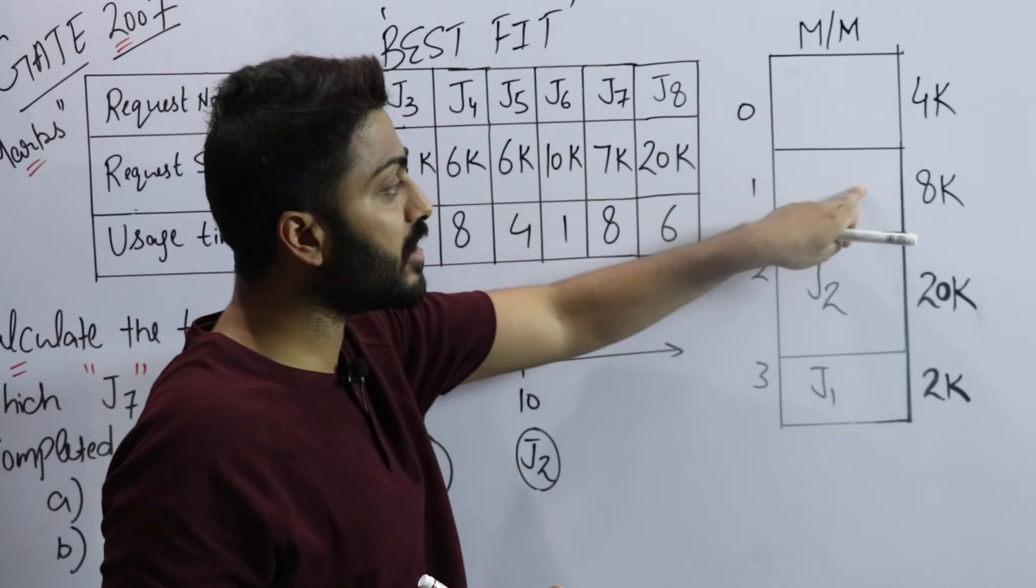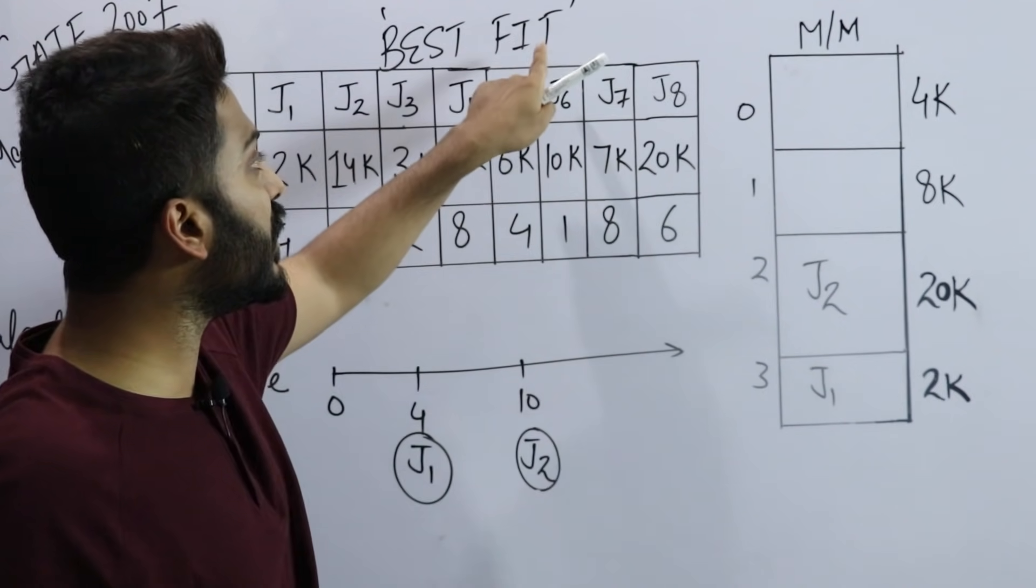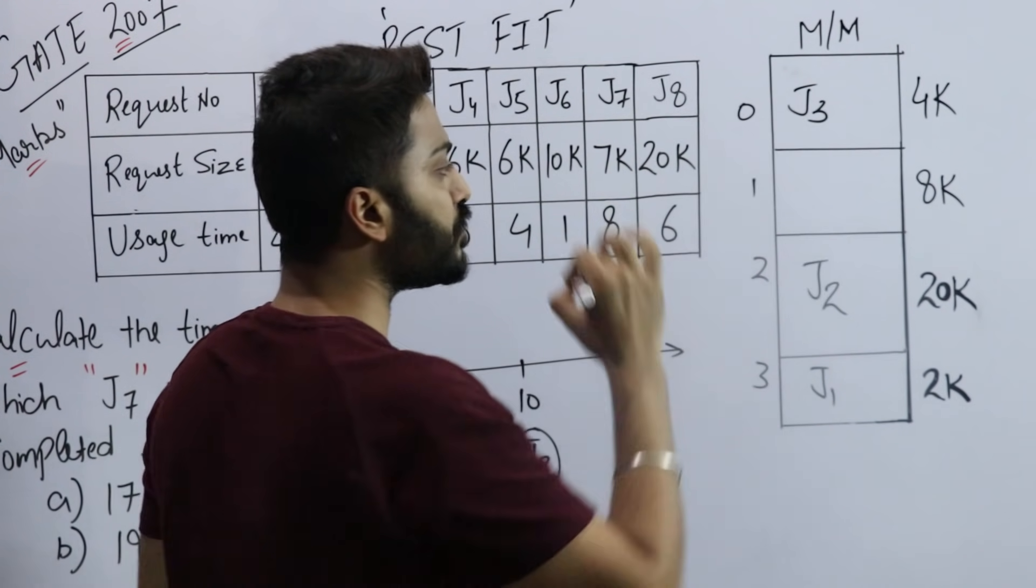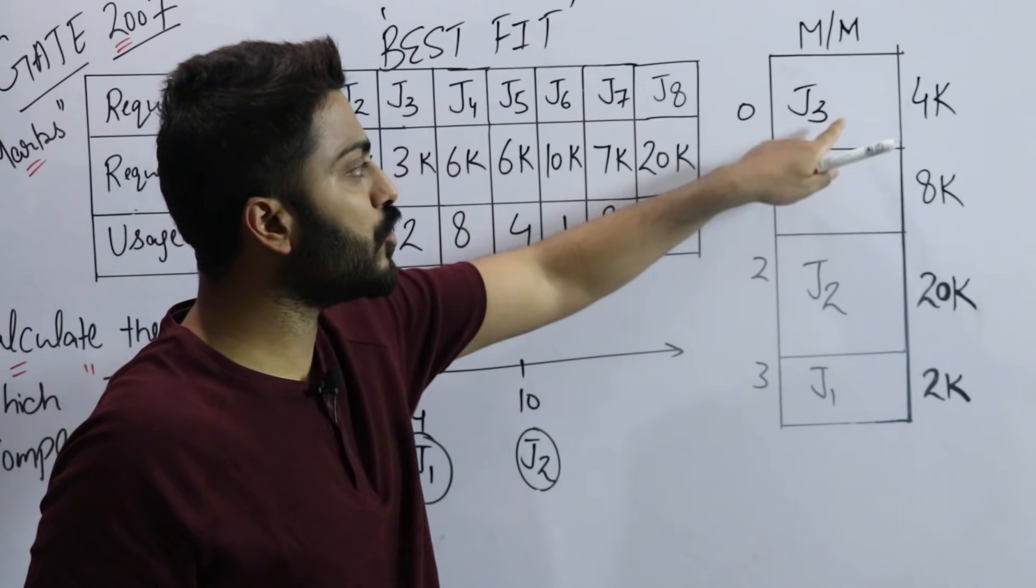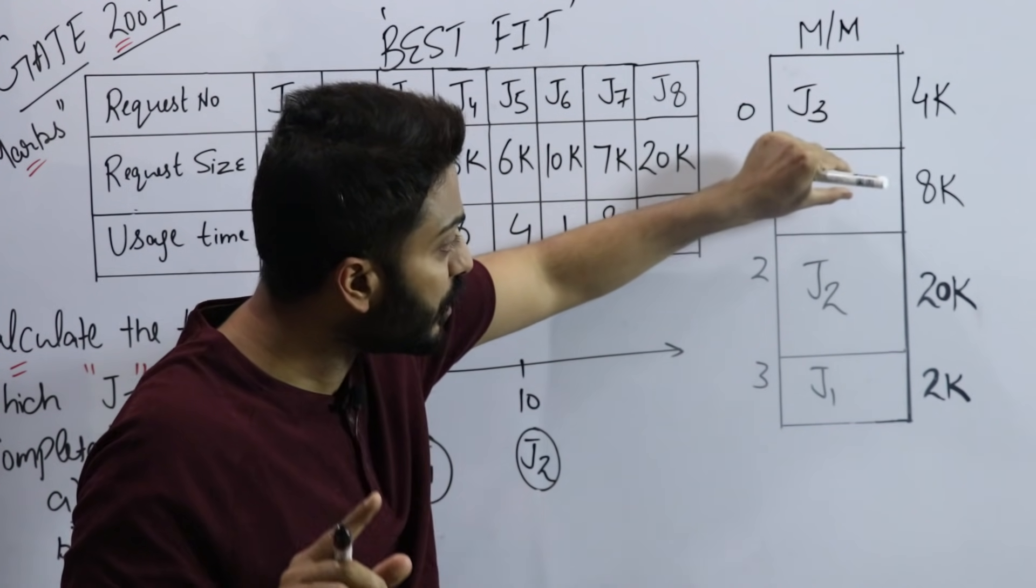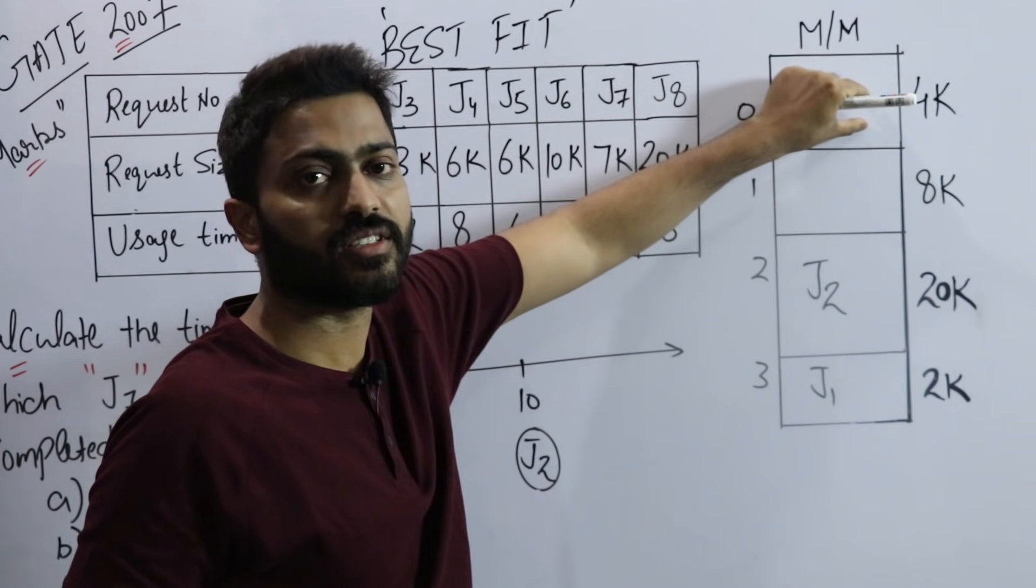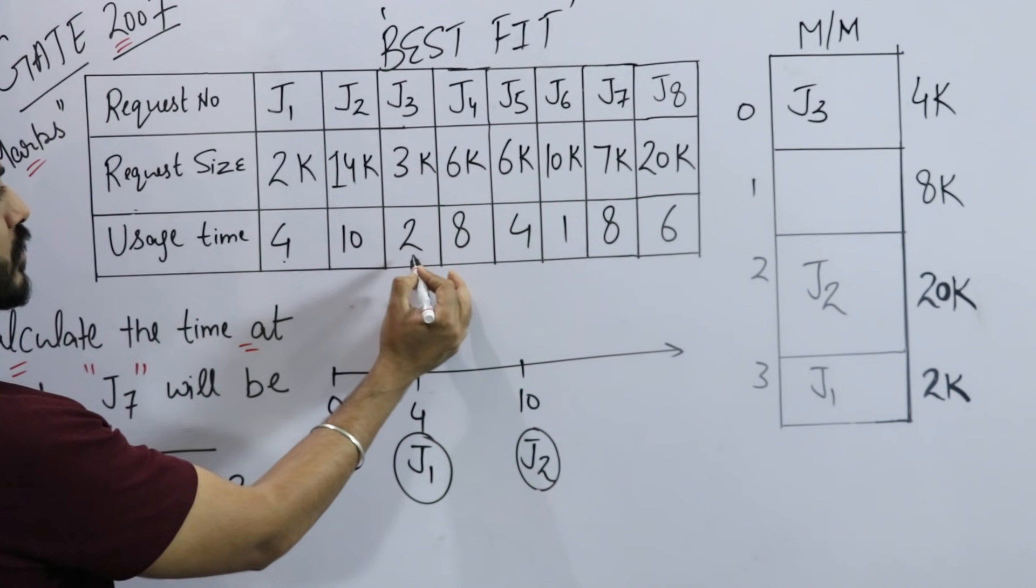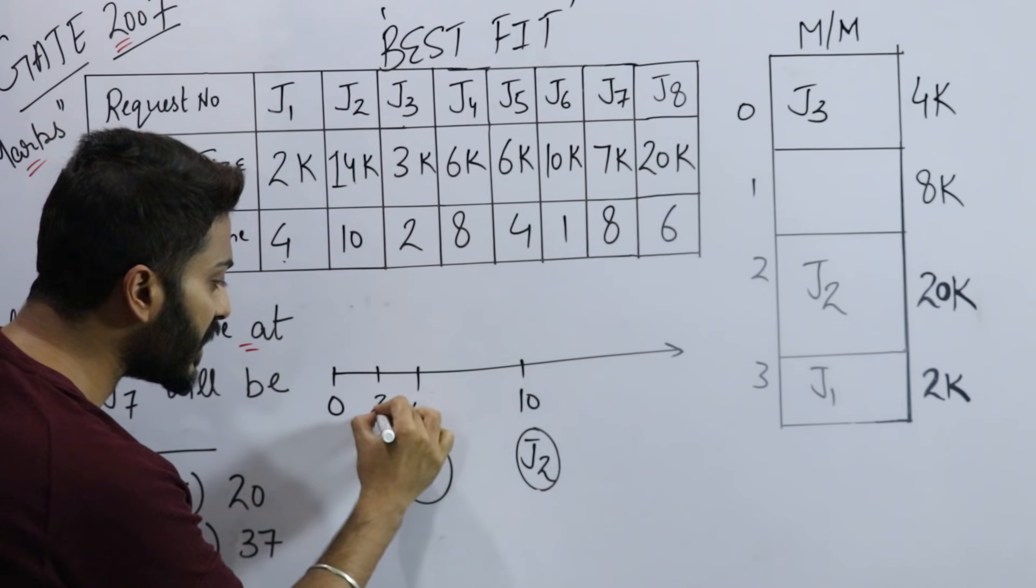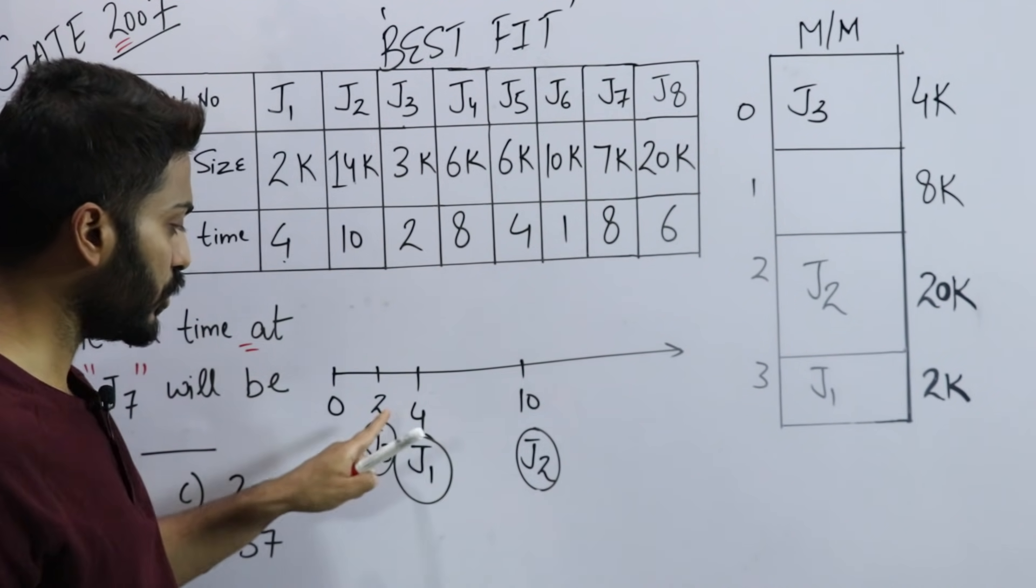J3 also came at time zero. J1 and J2 are already placed. J3 came at time 0 and needs 3k. If I fit 3k here, least space remains because only 1k will remain. But if I put it in the larger slot, more space will remain. According to best fit, it's best to place J3 in this slot. The time J3 needs is 2, so until time 2, J3 will remain inside.